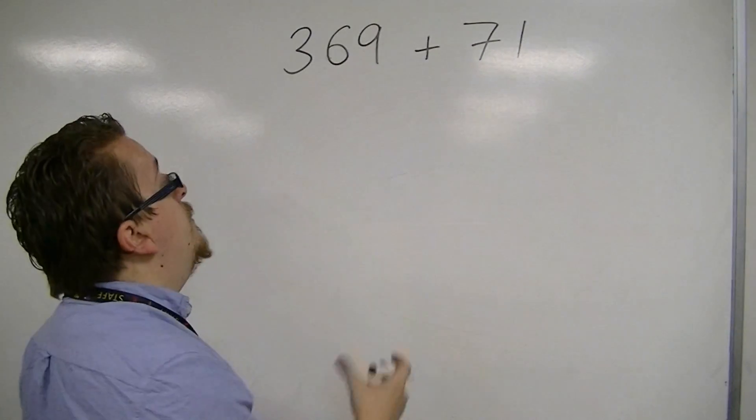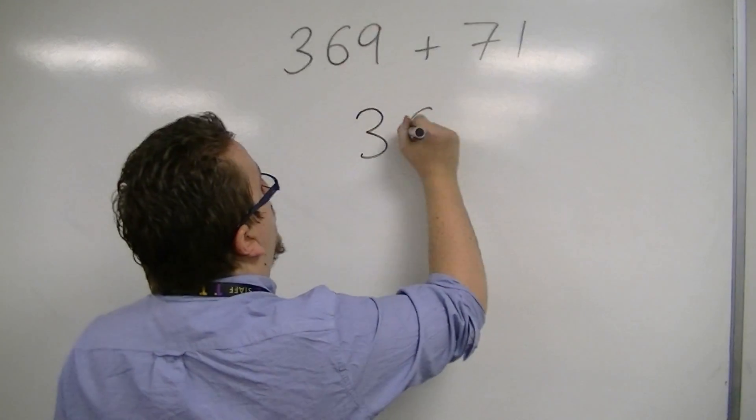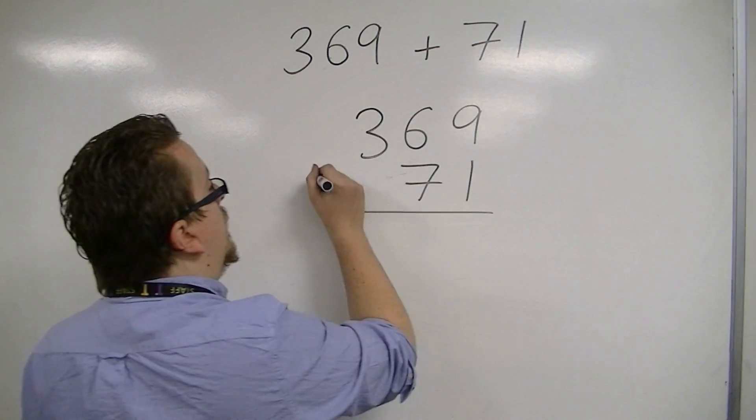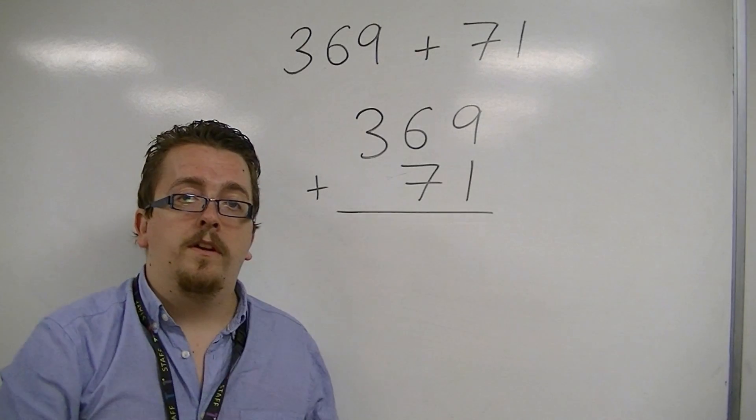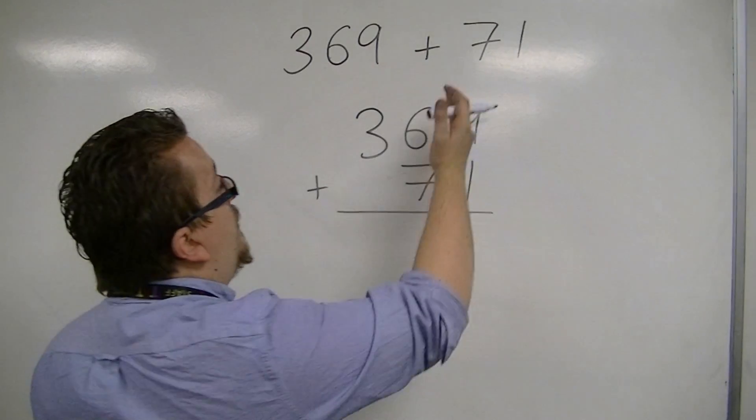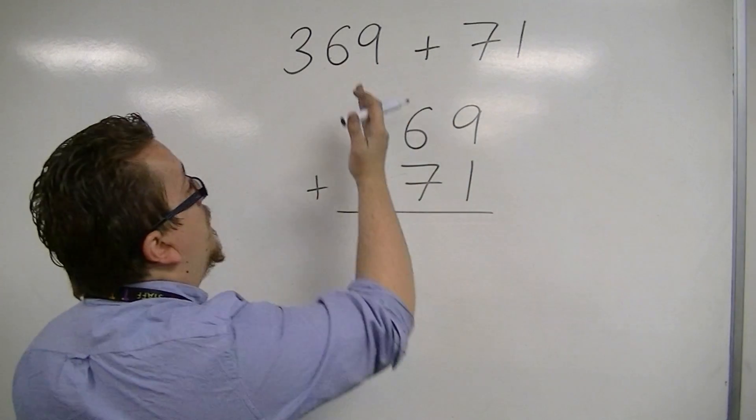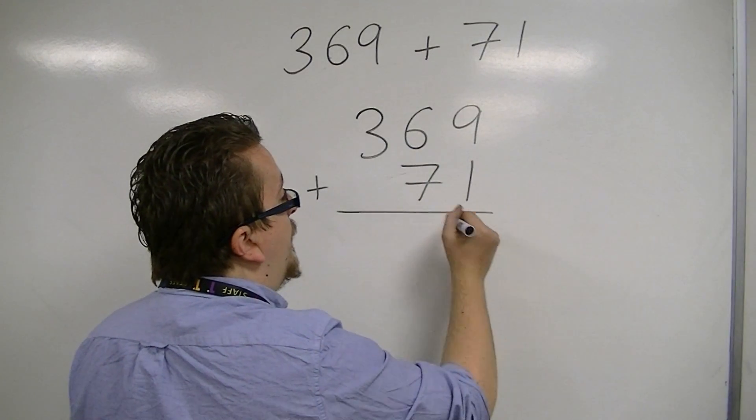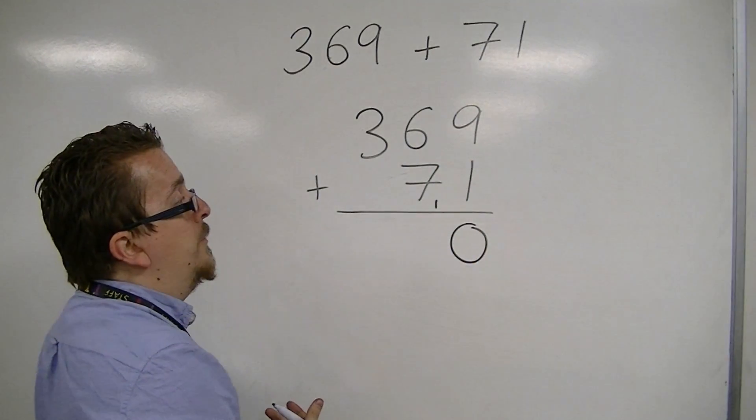then it is very important in writing the numbers down that you are writing them in column order, so in place value. So the units line up, the tens line up, the hundreds line up. 9 plus 1 is 10. Put the 0 and carry the 1 over. It's got that extra 1.